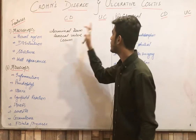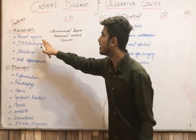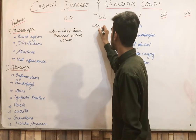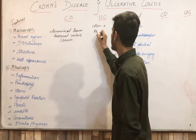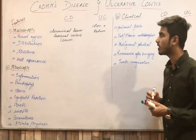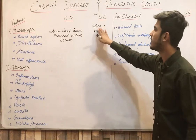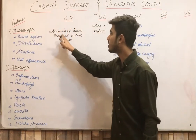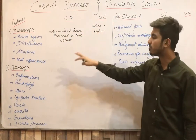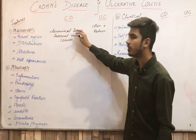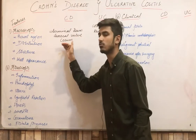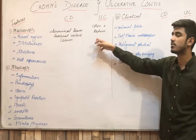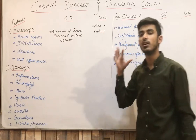Moving on to ulcerative colitis — ulcerative colitis is common in the colon and the rectum. So ulcerative colitis mainly occurs in the colon. In Crohn's disease, the small intestine is most commonly involved, and sometimes the large intestine is also involved. But in ulcerative colitis, only the large intestine — the colon and the rectum — are involved.